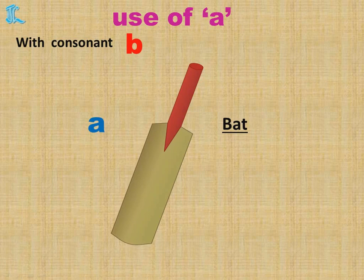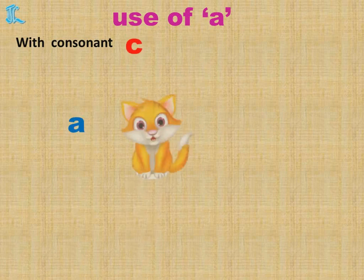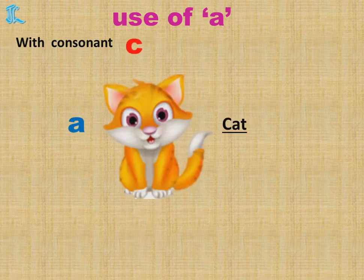So how will we name it? A Bat. Now let's see with other consonants also. Consonant C: A Cat.